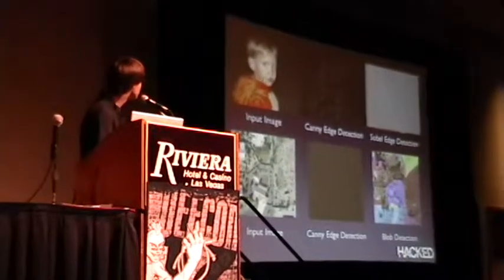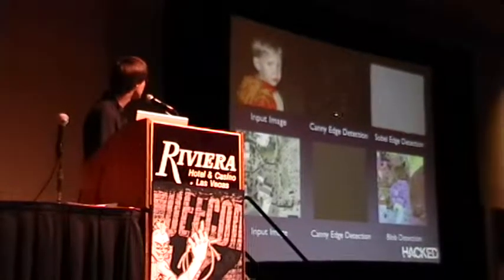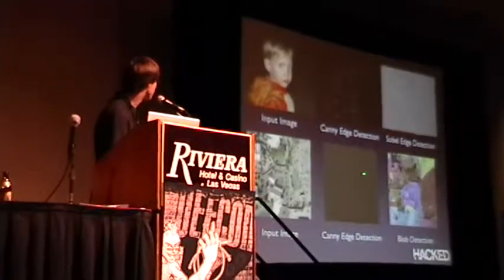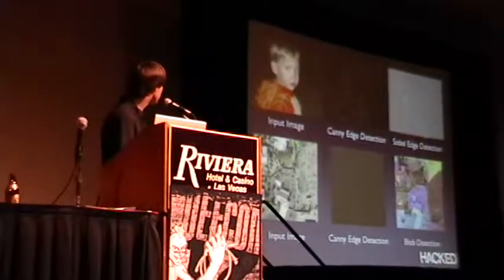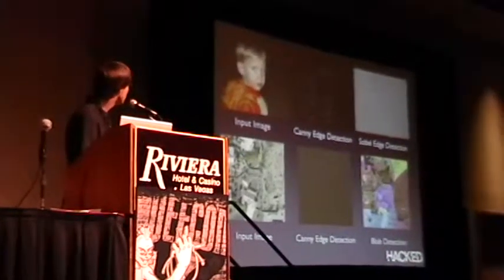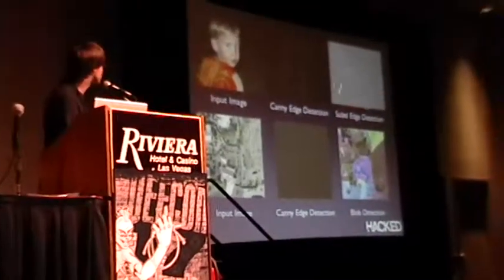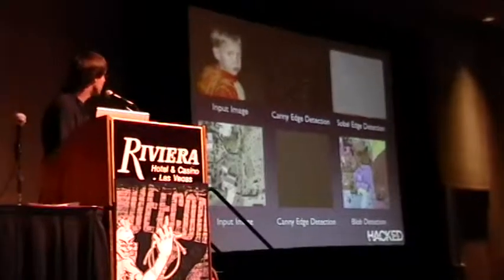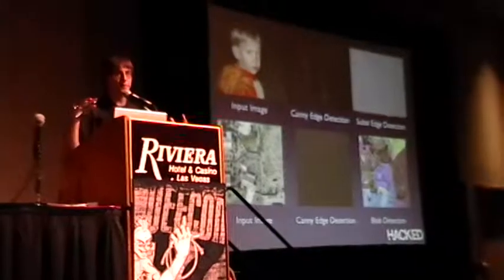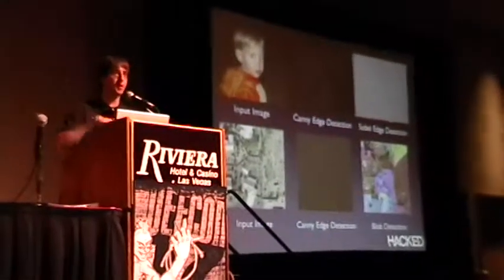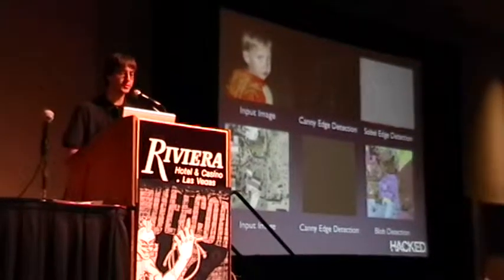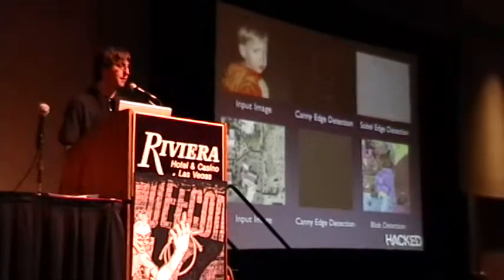Here's the first image they did — they did a Canny edge detection algorithm, so you can see it pulls out all the lines outlined in the image. Then this was a different edge detection algorithm. What they were trying to do was a block detection algorithm so that you can take massive NASA datasets of the surface of the Earth and find things that match a picture of something else. Hadoop is a really good framework for doing that.